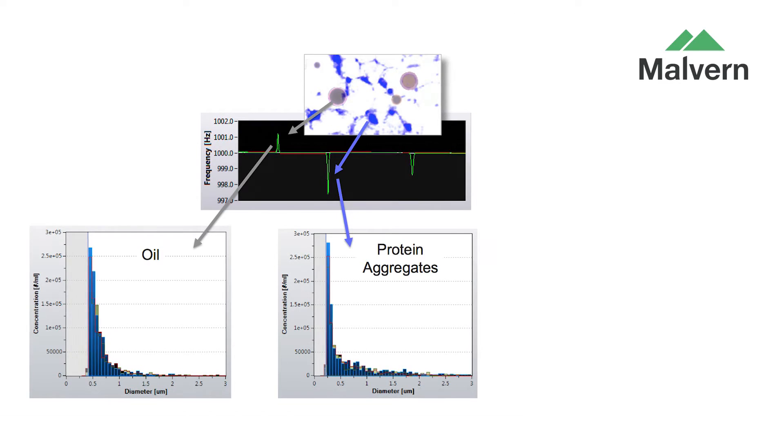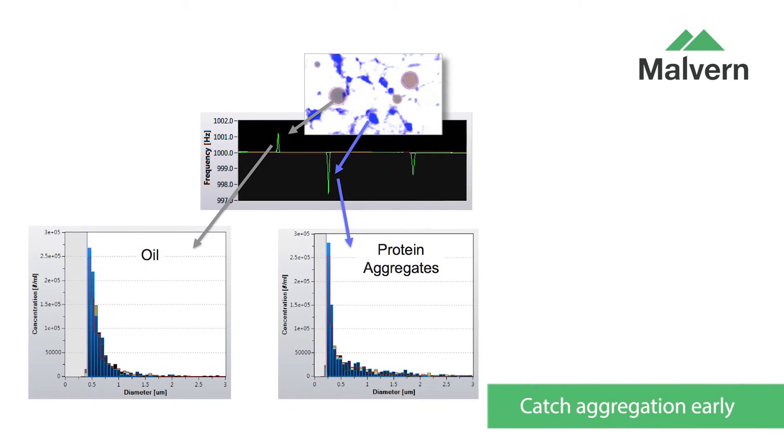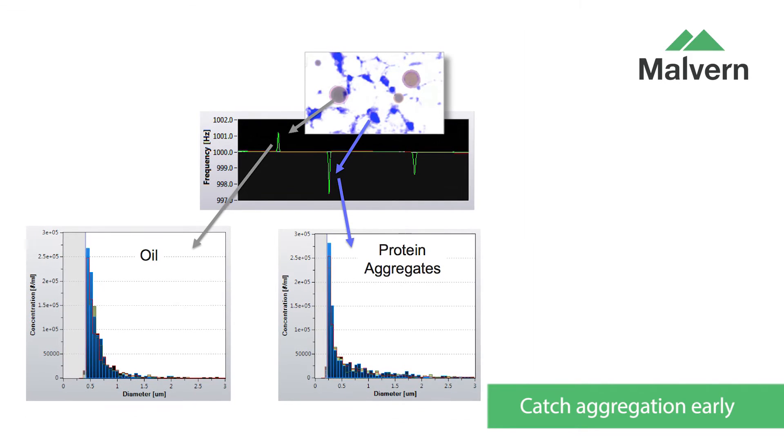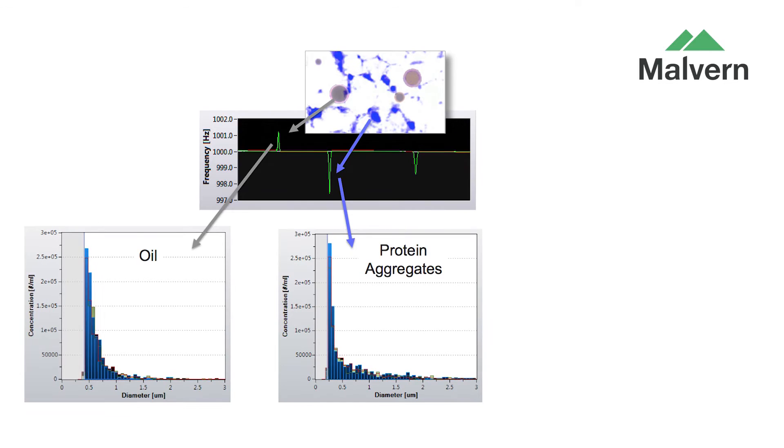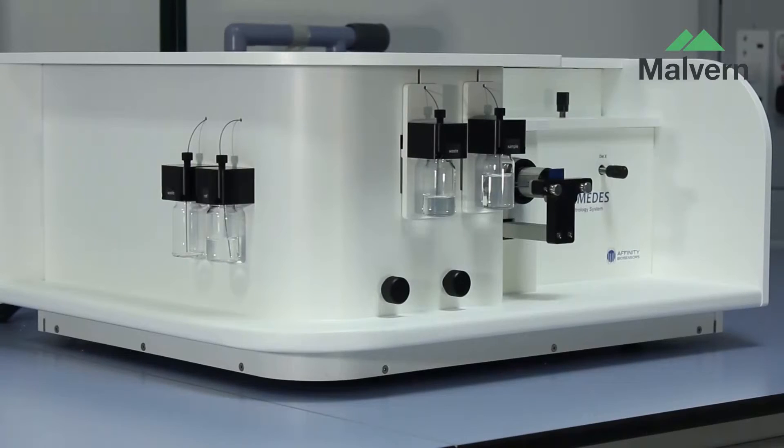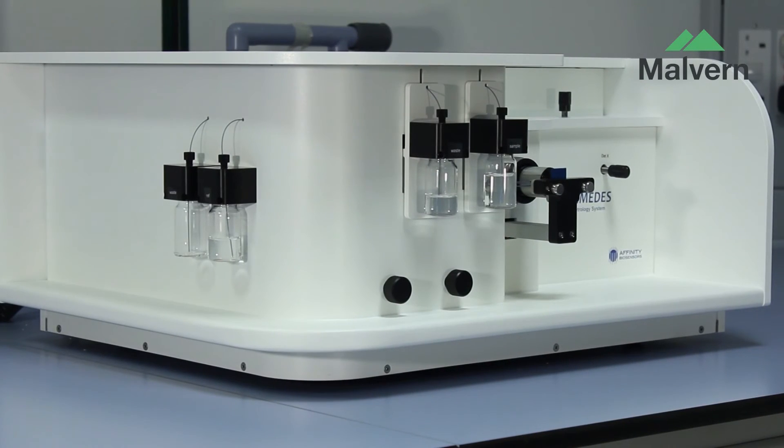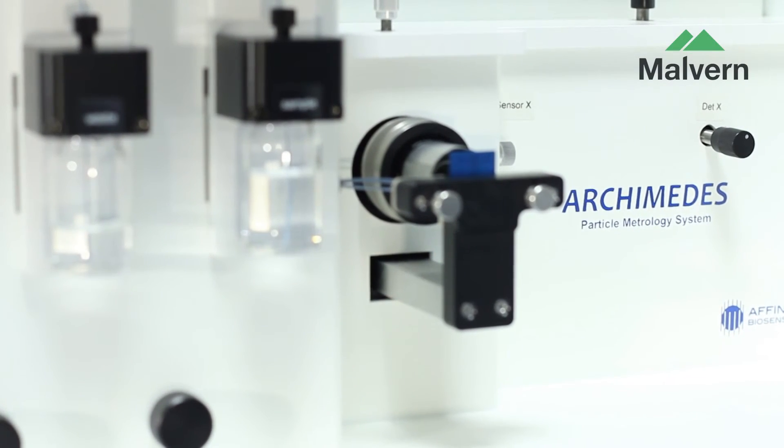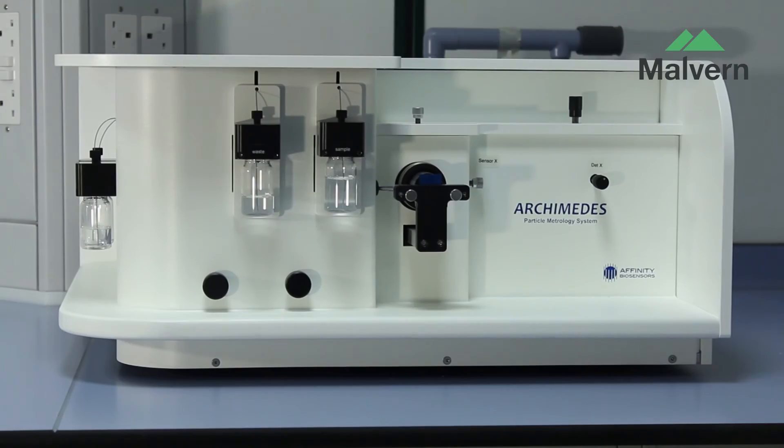If you're interested in detecting and counting aggregates smaller than one or two microns in protein formulations, Archimedes is perfect for your application. There's growing R&D and regulatory interest in quantifying particles in this size range, not least because they're increasingly linked with possible immunogenic effects.